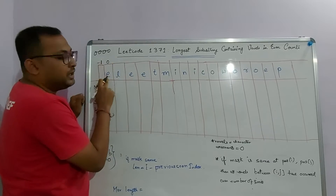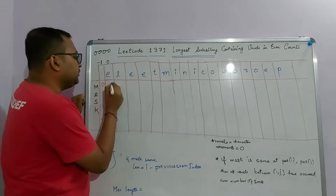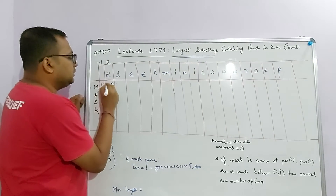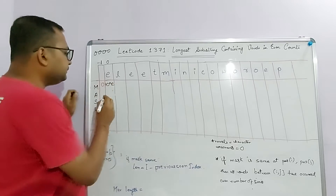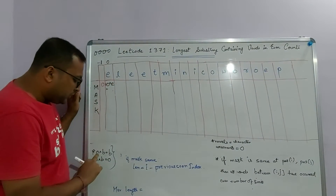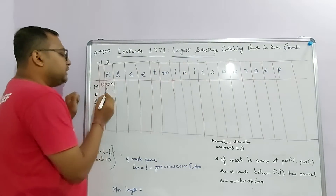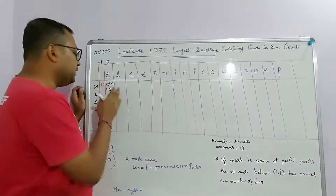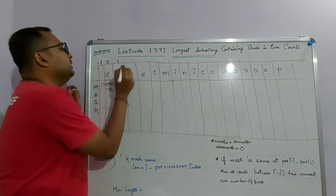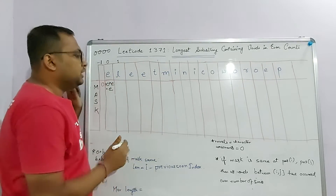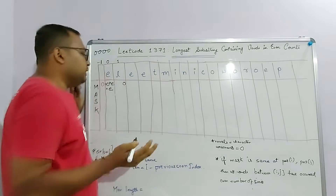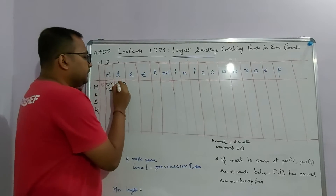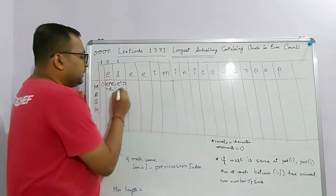At index 0 we have 'E', which is a vowel, so we take its character value E. The previous bitmask was 0, so 0 XOR E = E. At index 1 we have 'L', a consonant, so its value is 0. The previous bitmask was E, so E XOR 0 = E again. We haven't seen this bitmask value E before yet, so we note its first occurrence.